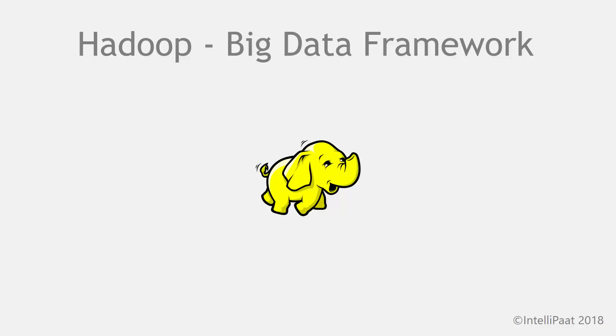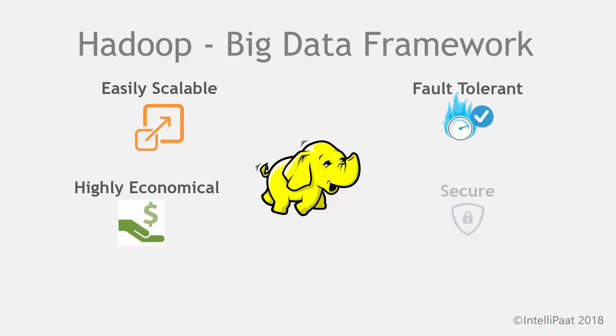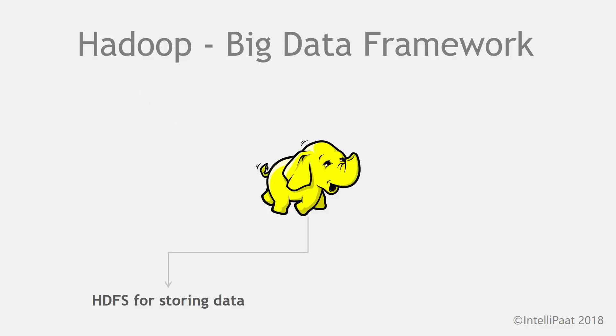Hadoop works in a distributed manner wherein both the processing and storing of data is distributed on commodity hardware. Hadoop is easily scalable, highly economical, fault tolerant and secure. Hadoop consists of Hadoop Distributed File System or HDFS for storing data and uses MapReduce for processing data.